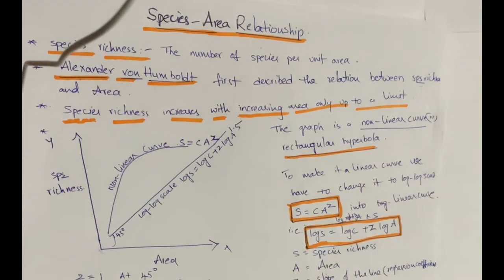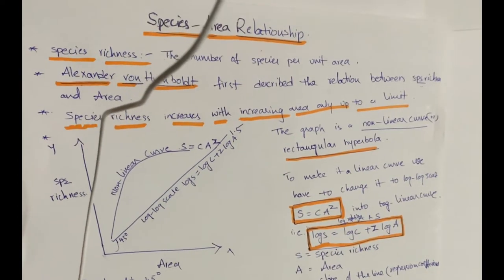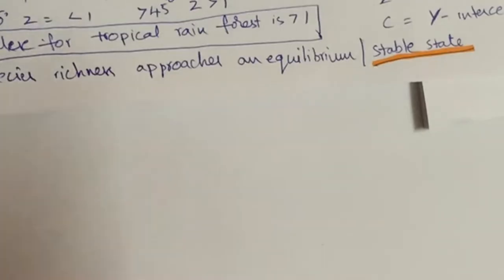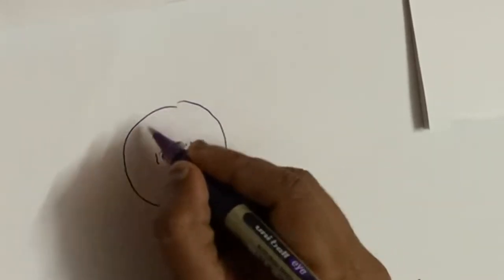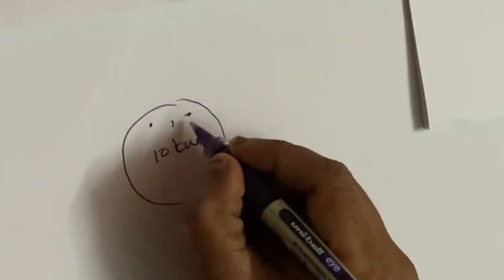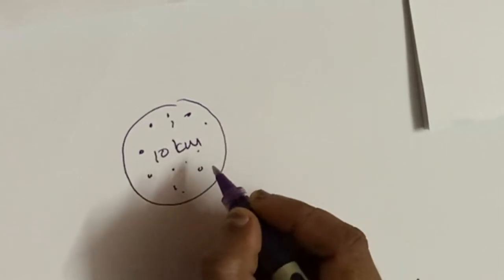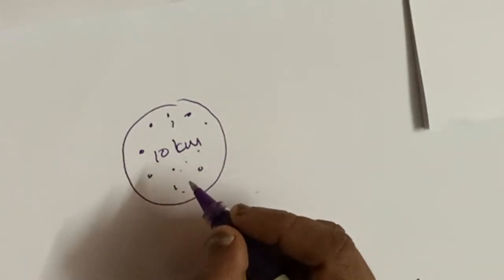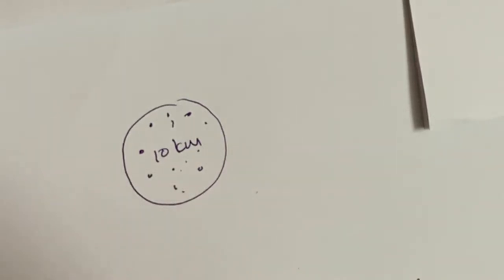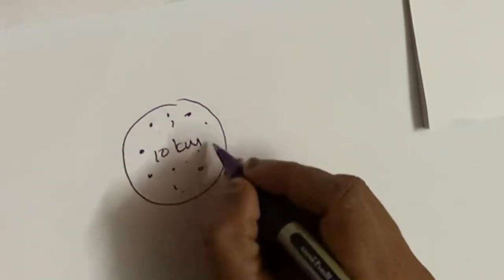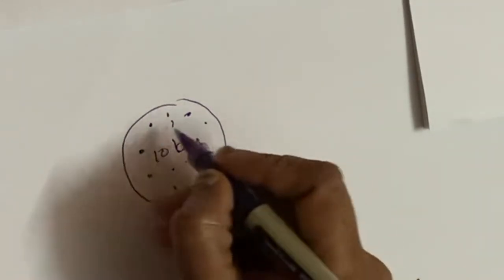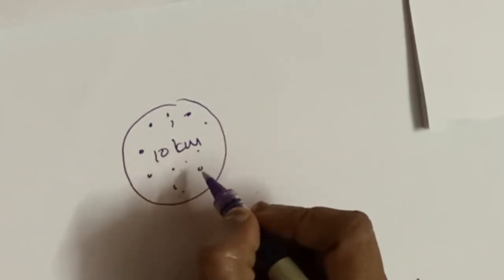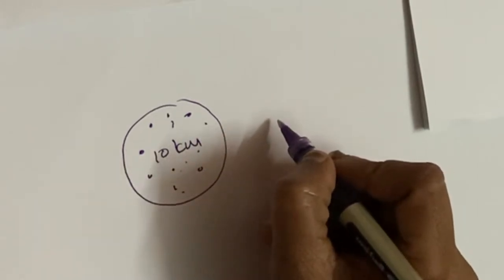Today we are going to learn about species-area relationship. The number of different species present in a unit area is considered as species richness. So if my locality is 10 kilometers range, the number of species present in this area — not the same species but different species: plants, animals, bacteria, algae, fungi — all the species present in this 10 kilometers area is known as species richness. The number of species per unit area is known as species richness.